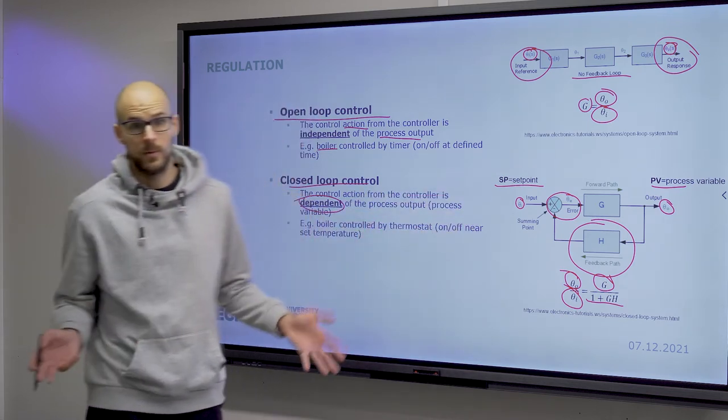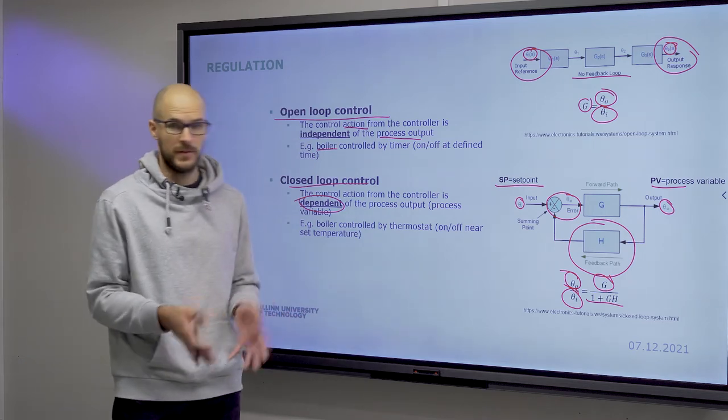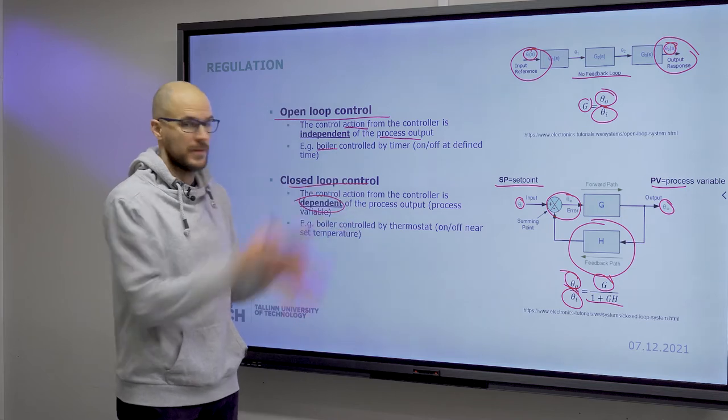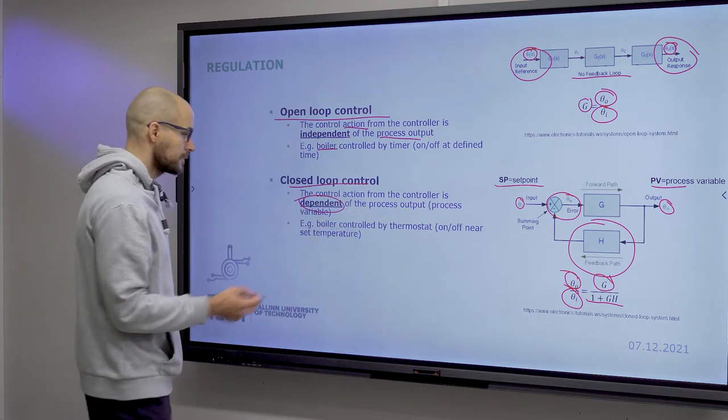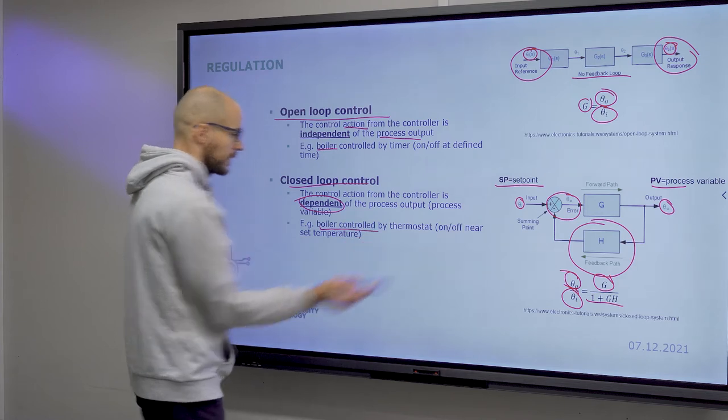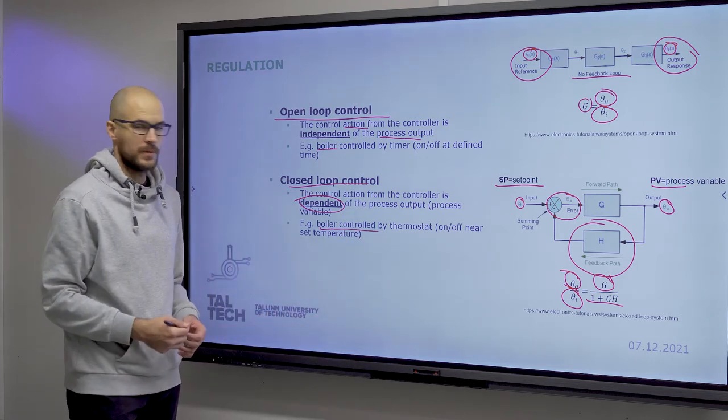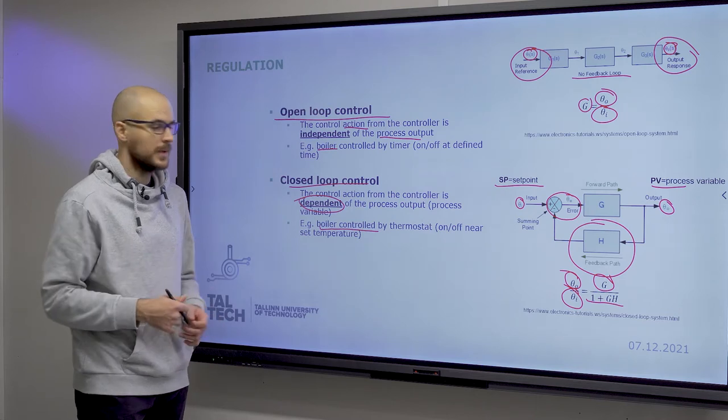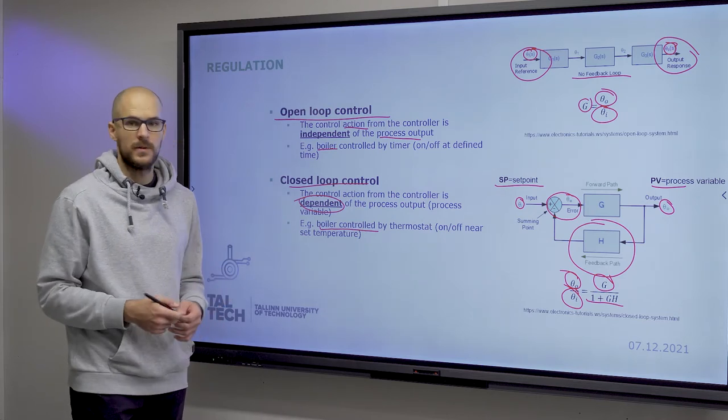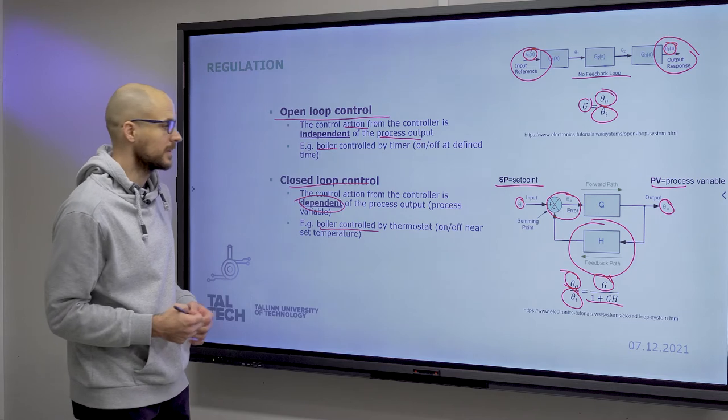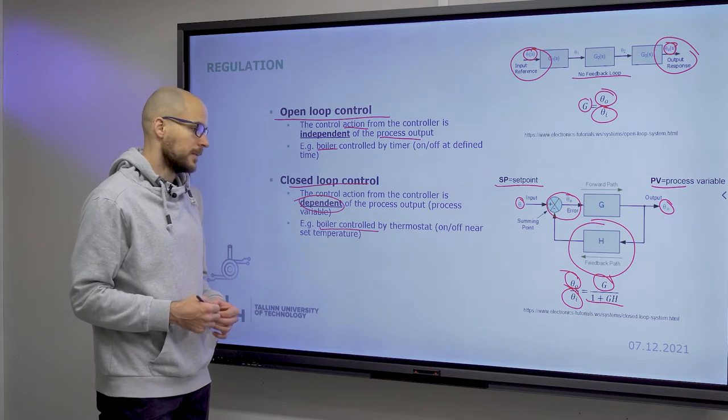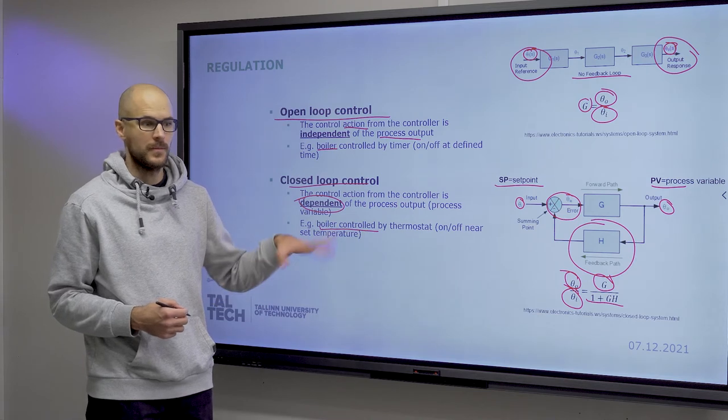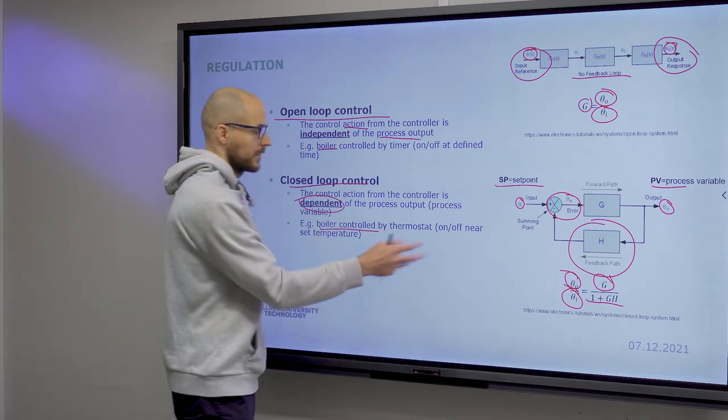So say you want to boil water, you want to reach 100 degrees Celsius. The process variable is the temperature, setpoint is 100 degrees. And in this case, for instance, the boiler can be controlled by a thermostat, which turns on and off depending on whether the set target or set temperature is reached or not. Can be as simple as just a bimetal relay or switch.